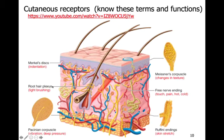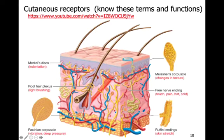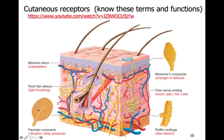You have your root hair plexus, which is wrapped around your root hair. As anything moves the position of those hairs, it will trigger the root hair plexus — so you detect a change in the position of the hair, like light brushing. And then lastly, the deepest, deep down, are the Pacinian corpuscles — notice you have discs throughout, and it's also an onion-shaped ring closed in a capsule. A Pacinian corpuscle detects vibrations and deep pressure.